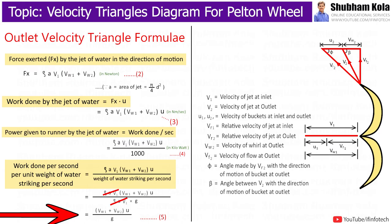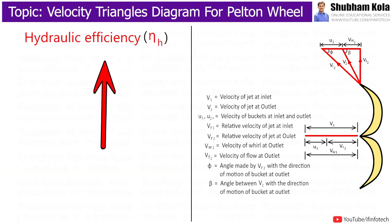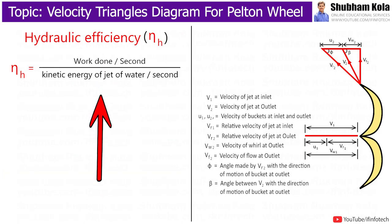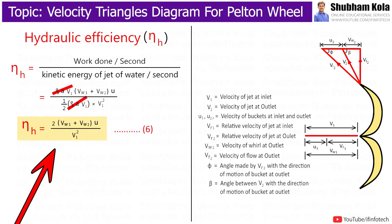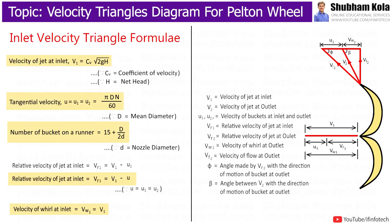Next, we calculate the hydraulic efficiency of the Pelton Wheel Turbine. The formula is: work done per second divided by kinetic energy of the jet per second. Work done per second was calculated in Equation 3, and the kinetic energy of the jet per second is (1/2)ρaV1·V1². Simplifying, ρaV1 cancels out from numerator and denominator.